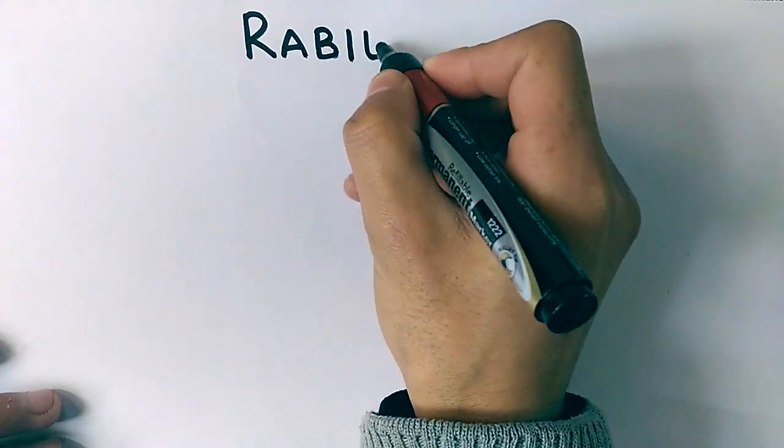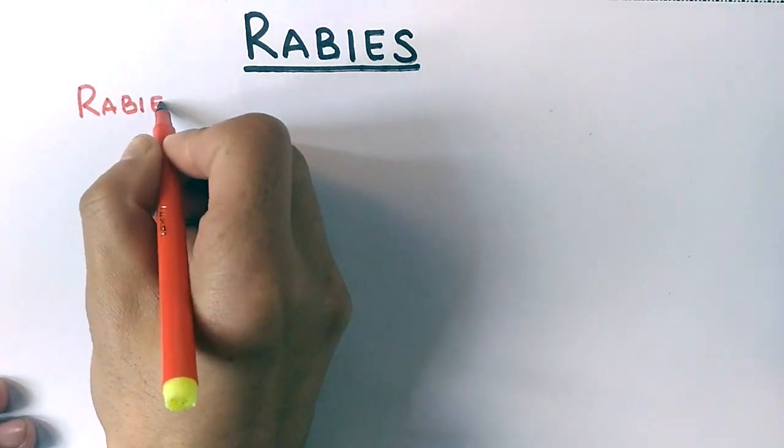Hello friends, in this video we'll be discussing a disease called rabies, which is caused by a rabies virus. We will be discussing its life cycle also, so let's get started. Rabies disease is caused by a virus called rabies lyssavirus.